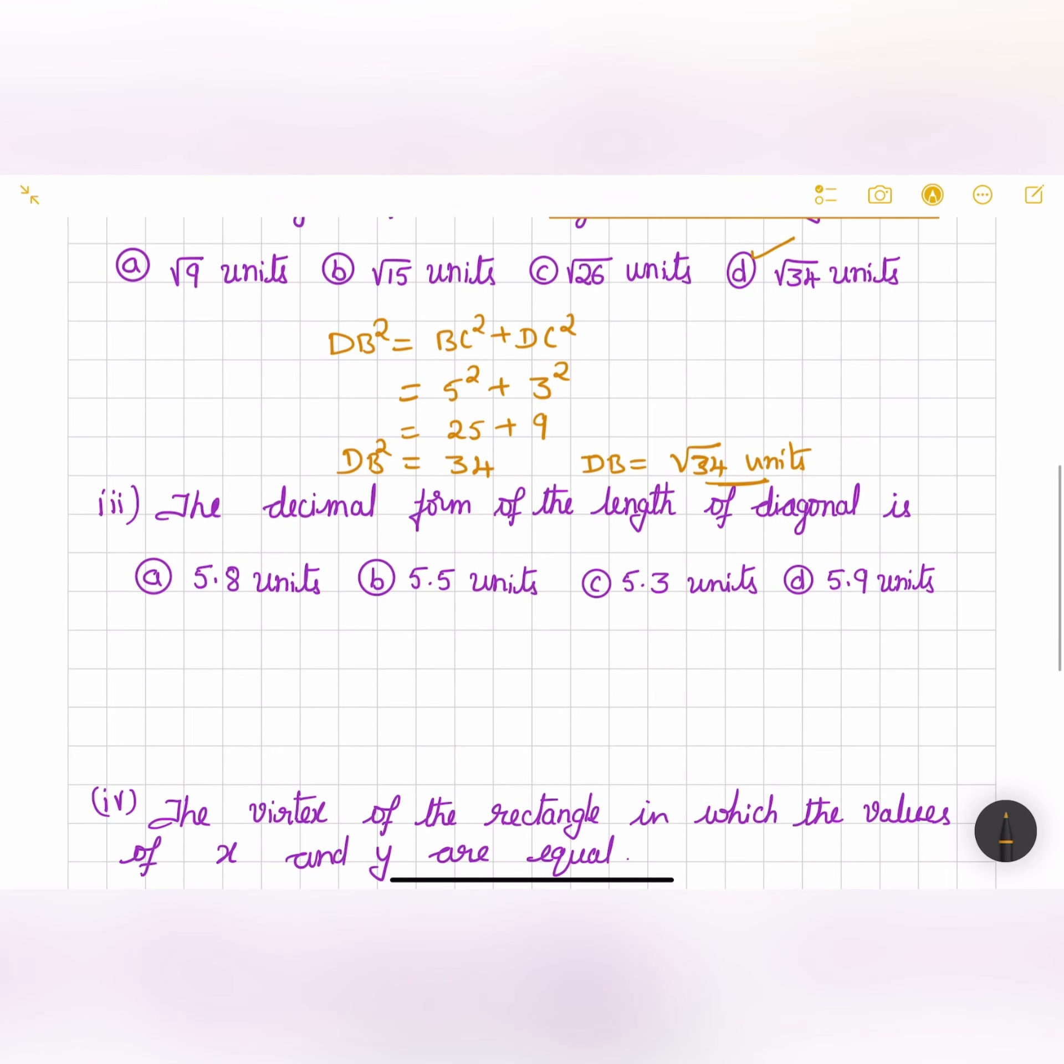Let me go for the third one. The decimal form of the length of diagonal is? So we have again four options. Let us find out the decimal form of 34. That is square root of 34. Anyhow, they have already given for us.